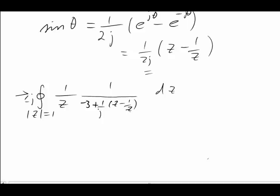Let's expand out the denominator, multiplying the z by everything next to it in the other quotient. So that will become negative j still at the front. Contour integral mod z equals 1, 1 over negative 3z plus 1 over j z squared minus 1 over j and z times 1 over z is 1.